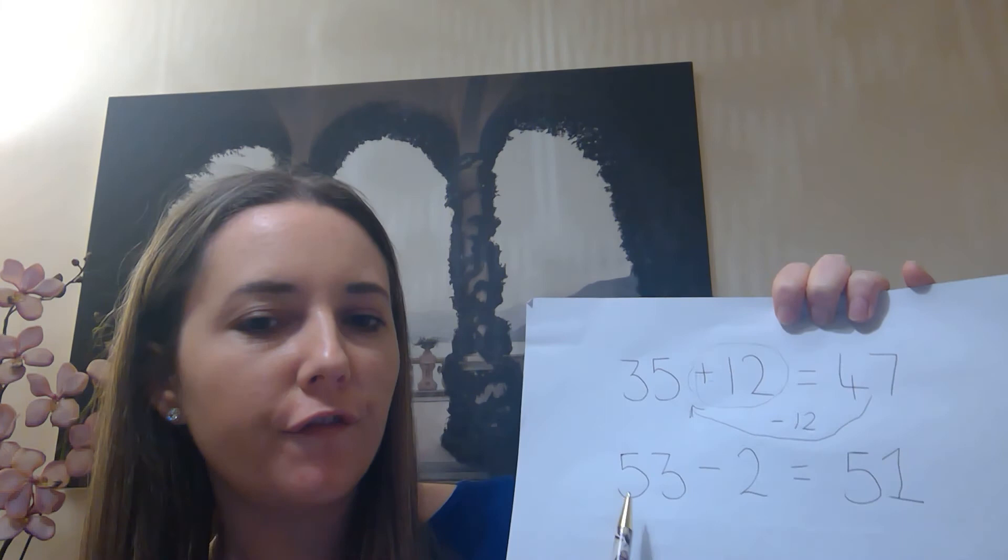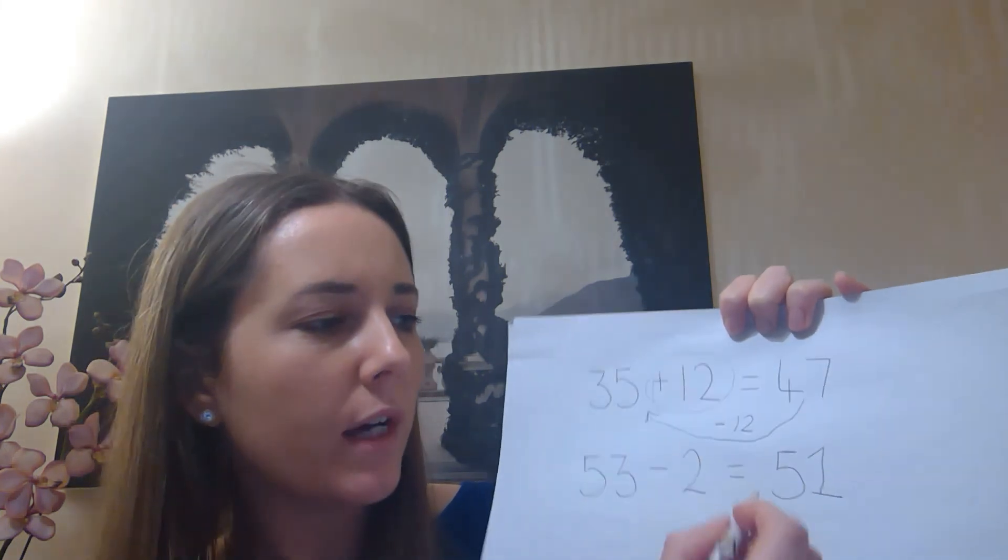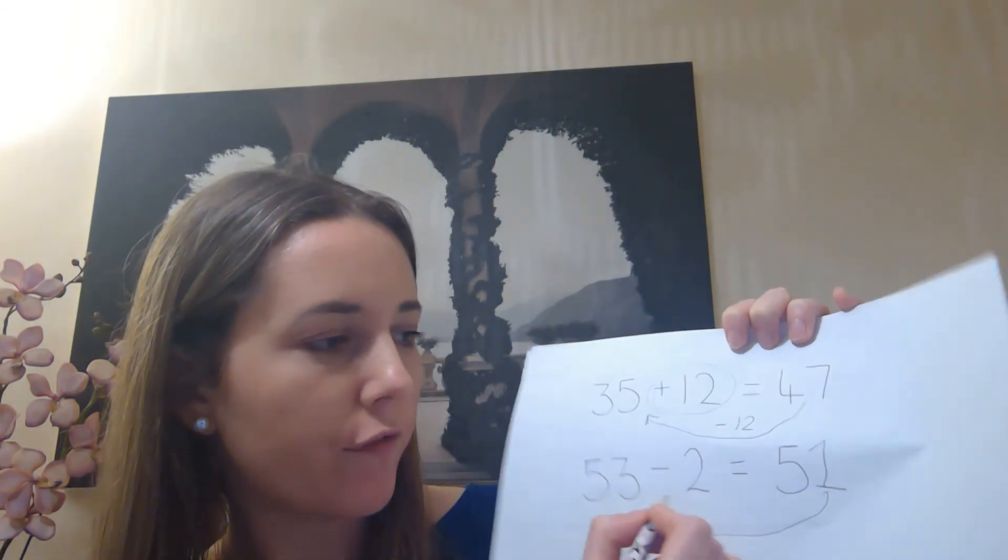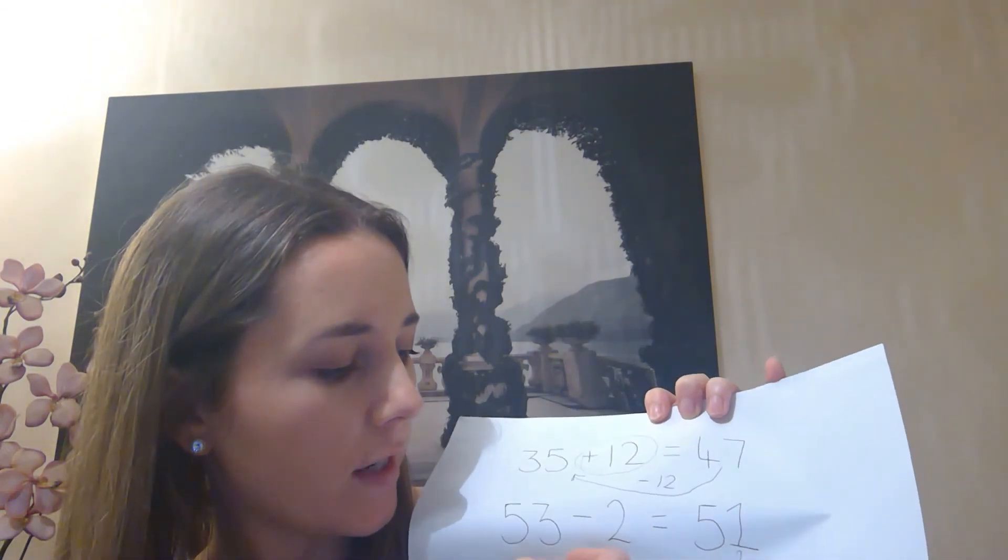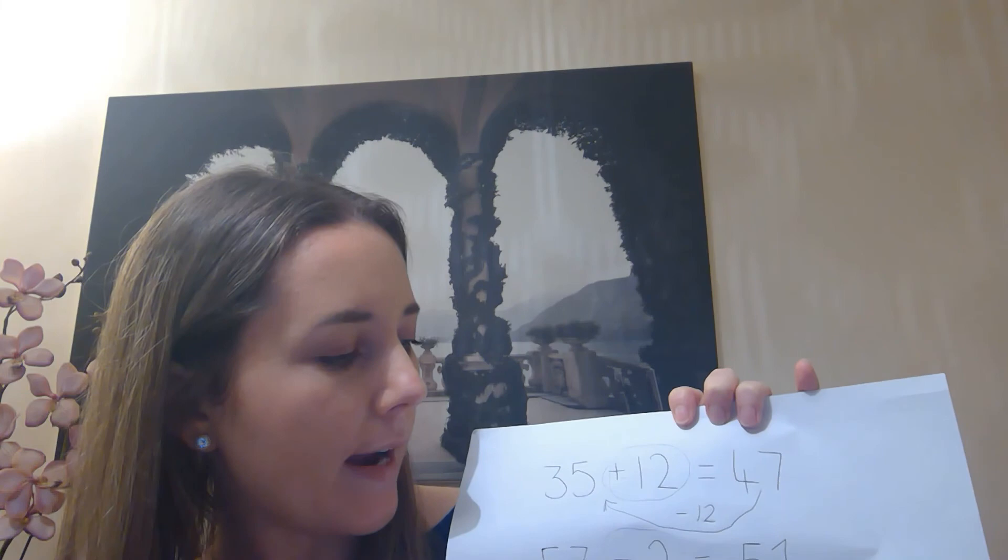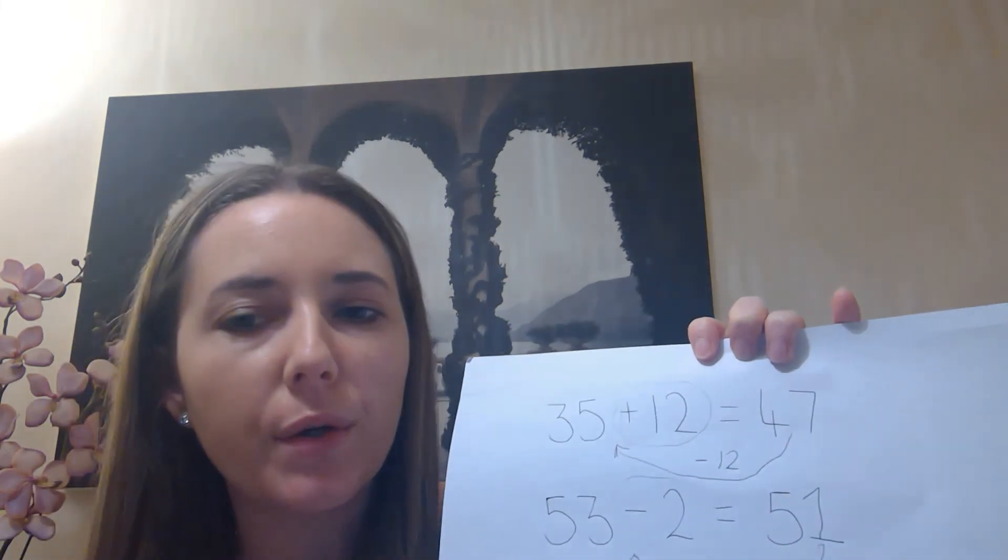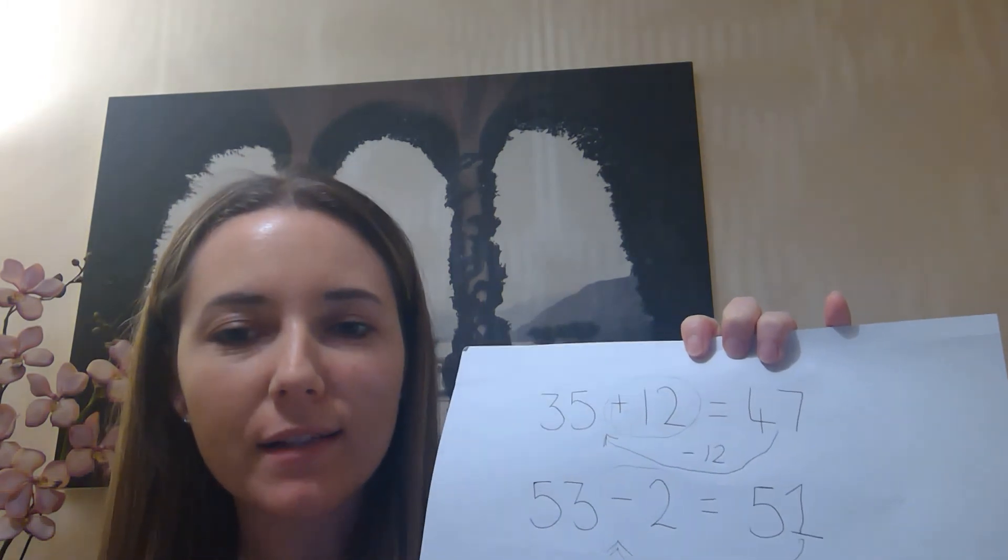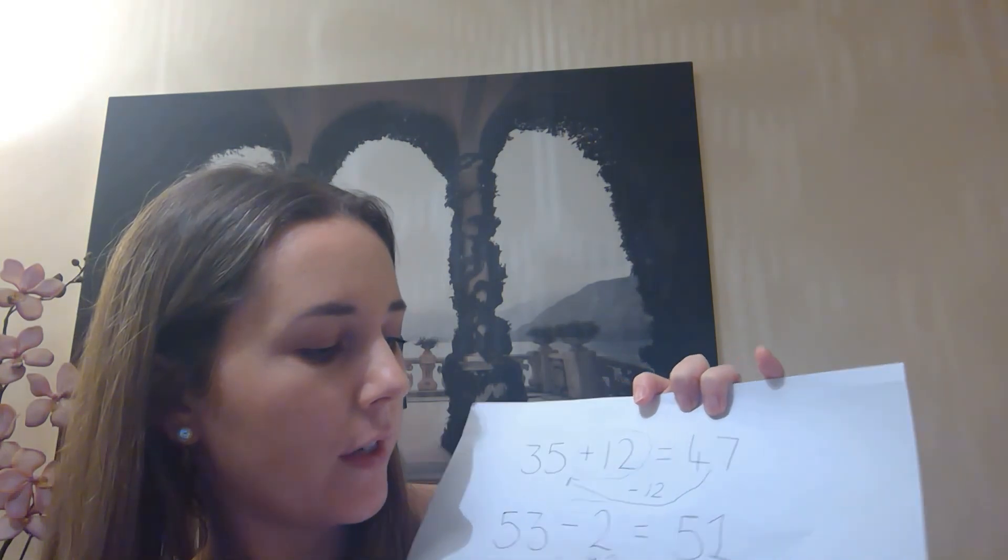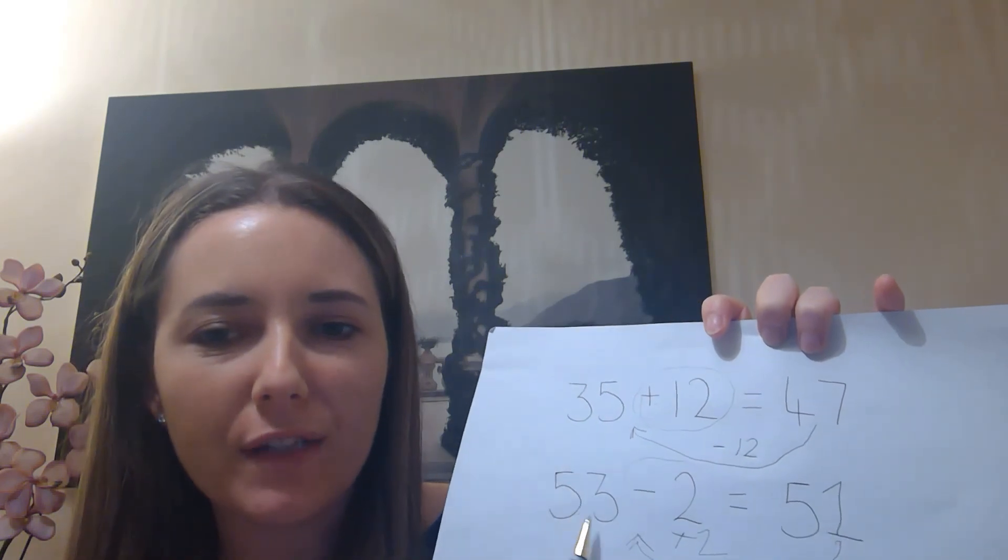For this one, 53 take away 2 equals 51. To work out our inverse, we'll draw our arrow from our answer to the first number. And then we will look at our operation, take away 2. Instead of taking away 2, we need to do the opposite. So we're going to add 2. So we will do 51, add 2 should equal 53.